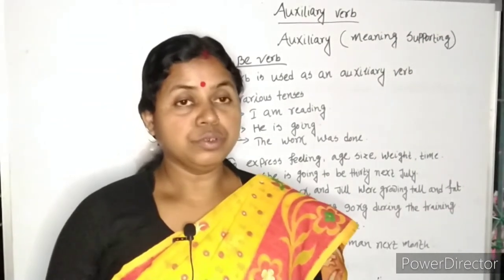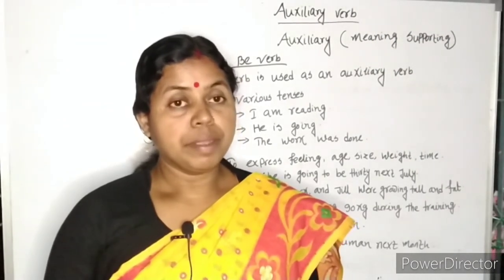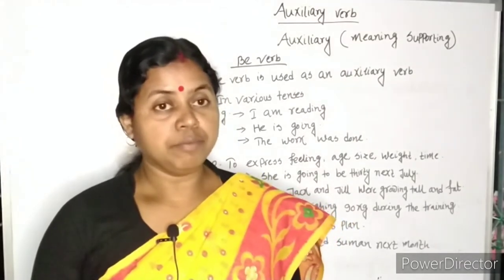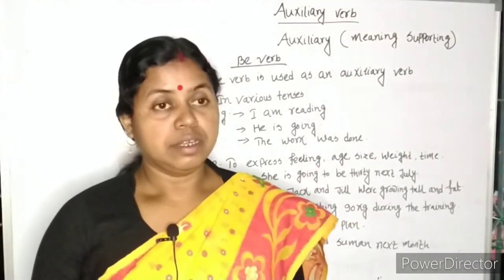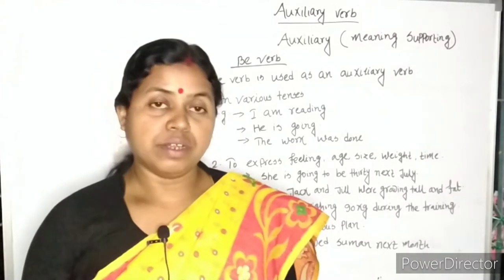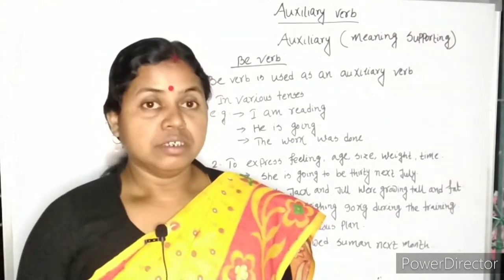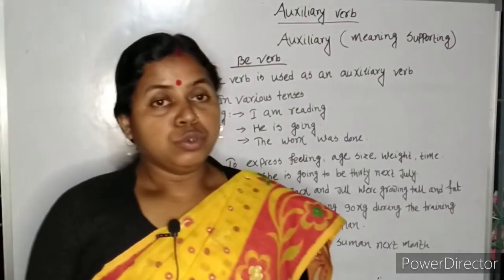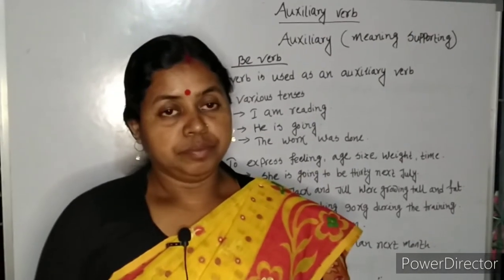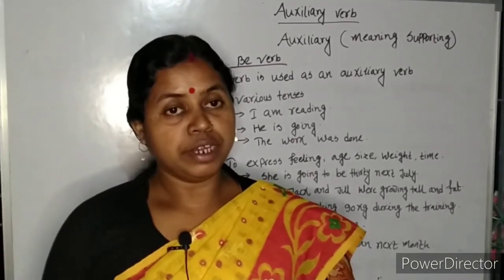Here I am going to discuss about the use of be verb. Be verb is used as an auxiliary verb in various tenses, such as: I am reading, he was reading, the work was done. It also expresses a previous plan. For example: he is to visit next month.